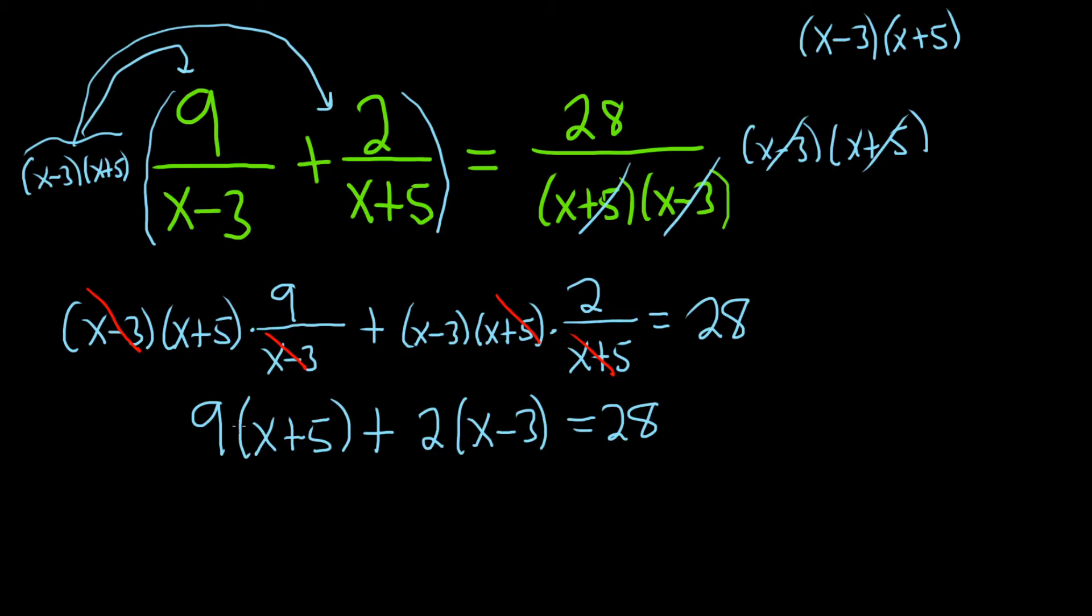All right, now let's go ahead and distribute stuff. So 9 times x is going to give us 9x. And then 9 times 5 will give us 45. Plus, and then 2 times x will give us 2x. And then 2 times negative 3 is negative 6. And this is equal to 28.